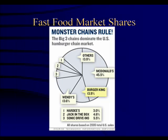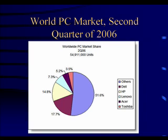In the fast food area, McDonald's is number one, with Burger King and Wendy's falling fairly far behind. In PC markets, Dell was the dominant player as of 2006, followed by HP, which may have caught up in more recent times due to its merger with Compaq. Lenovo of China is number three.